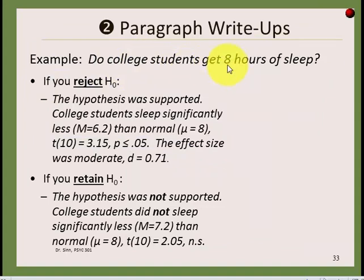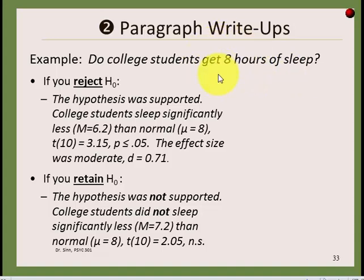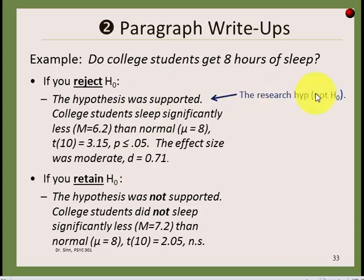Now we'll learn how to write the paragraph — putting into English the findings from a statistical test. Imagine we're testing whether college students get eight hours of sleep. We'd sample students, record how many hours of sleep they got, compute the sample mean, standard deviation, and t-obtained score, and compare against a null hypothesis of eight hours. Results come out one of two ways: we either reject or retain the null.